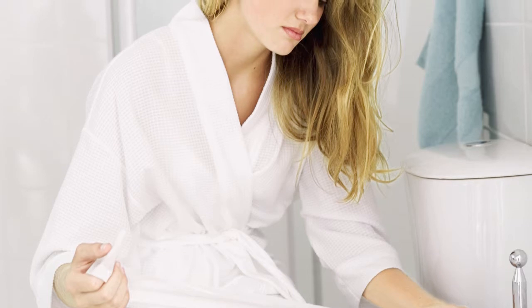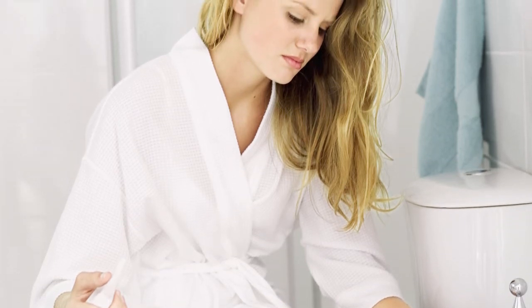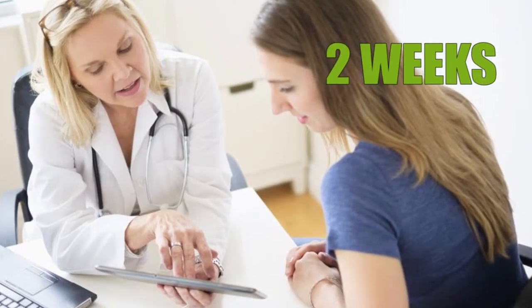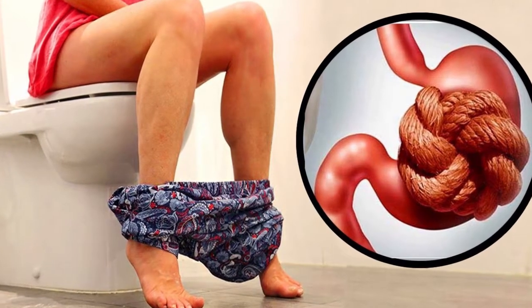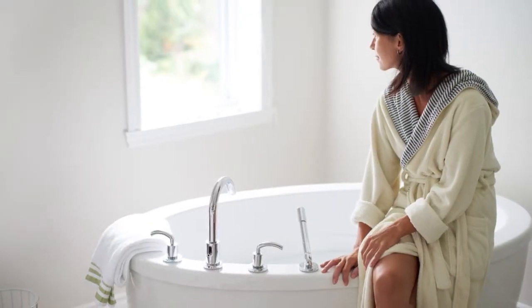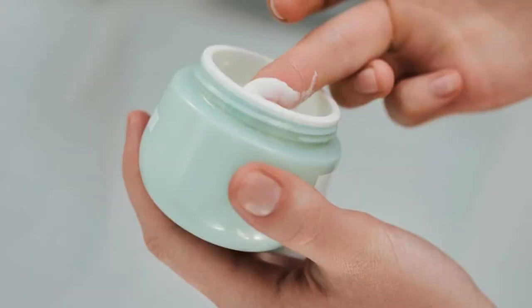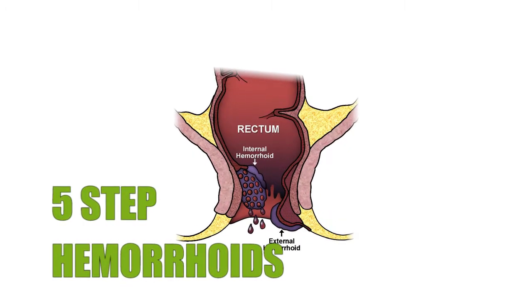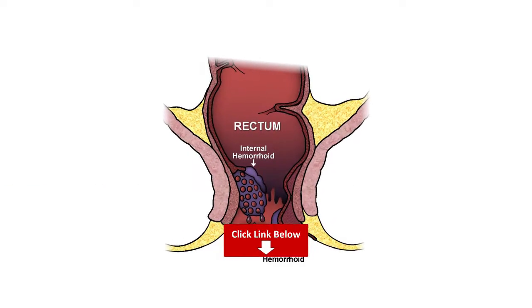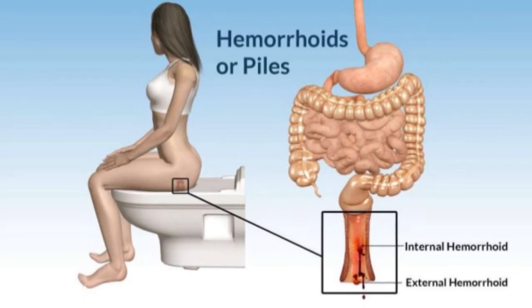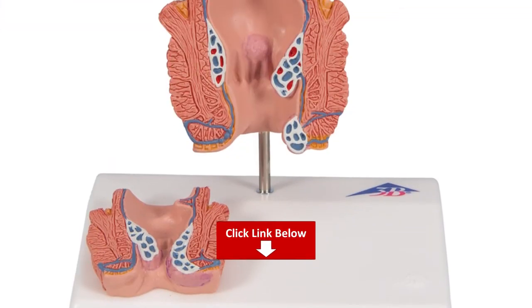Lisa followed a five-step plan and learned how to reverse her condition. In less than two weeks, her hemorrhoids had disappeared, along with the IBS and constipation — a life-changing experience. This proven system is available for men and women around the world. If you want to find out more about the Hemorrhoid No More program, click the link below this video.